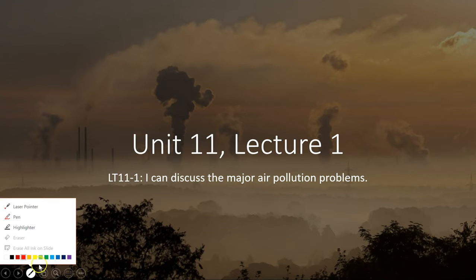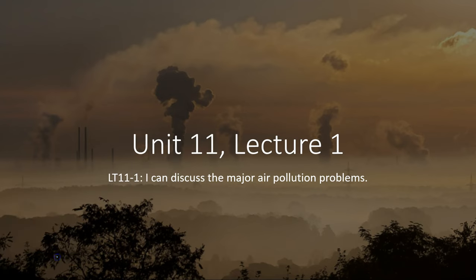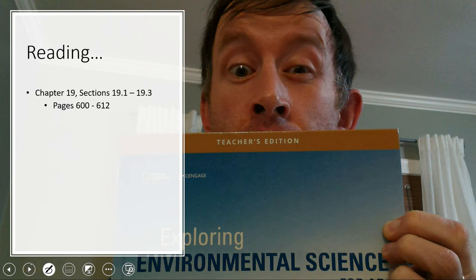Hey guys, so here we are for Unit 11. The primary topic is going to be air pollution. With this first learning target, we're going to look at the major air pollution problems. The reading that is supposed to accompany this portion of Unit 11 is Chapter 19, pages 600 through 612.